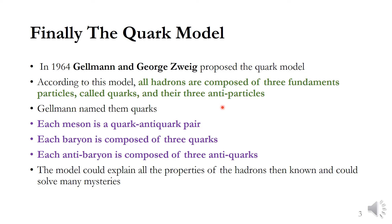Gell-Mann named them quarks. Each meson is a quark-anti-quark pair, while each baryon is composed of three quarks, and each anti-baryon is composed of three anti-quarks. This model could explain all the properties of hadrons and it could solve many mysteries that were not previously explained.